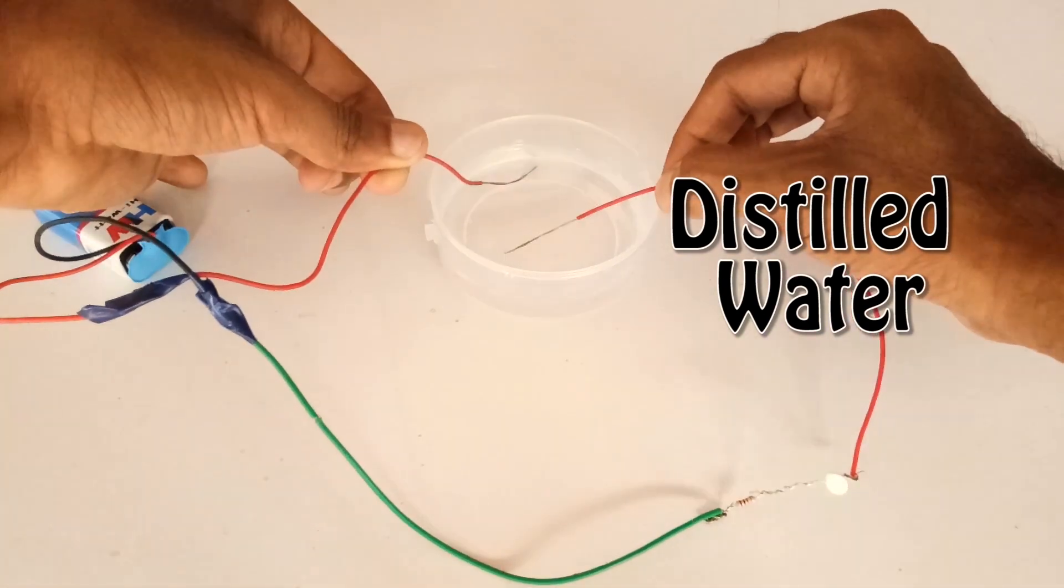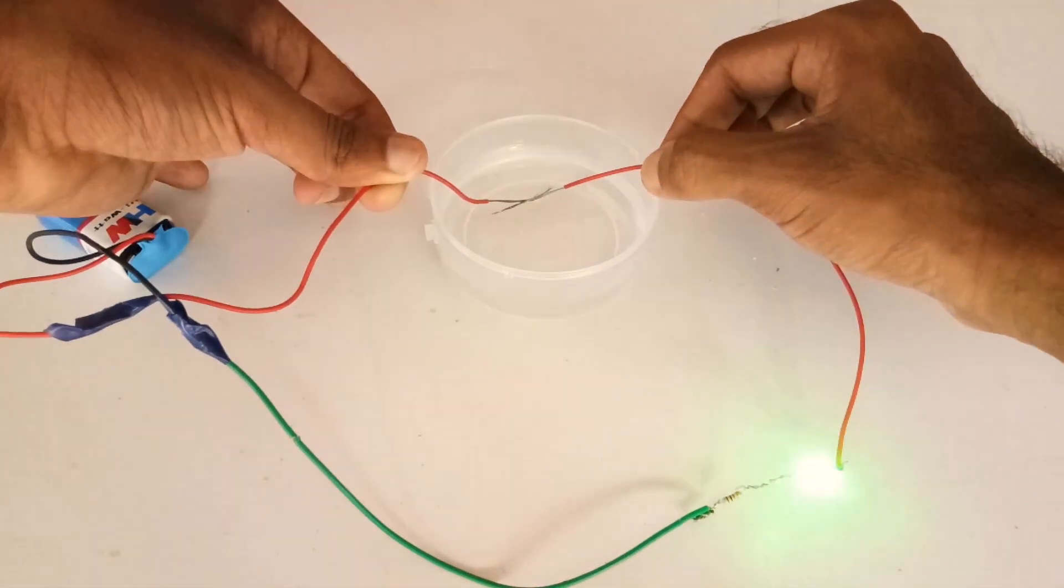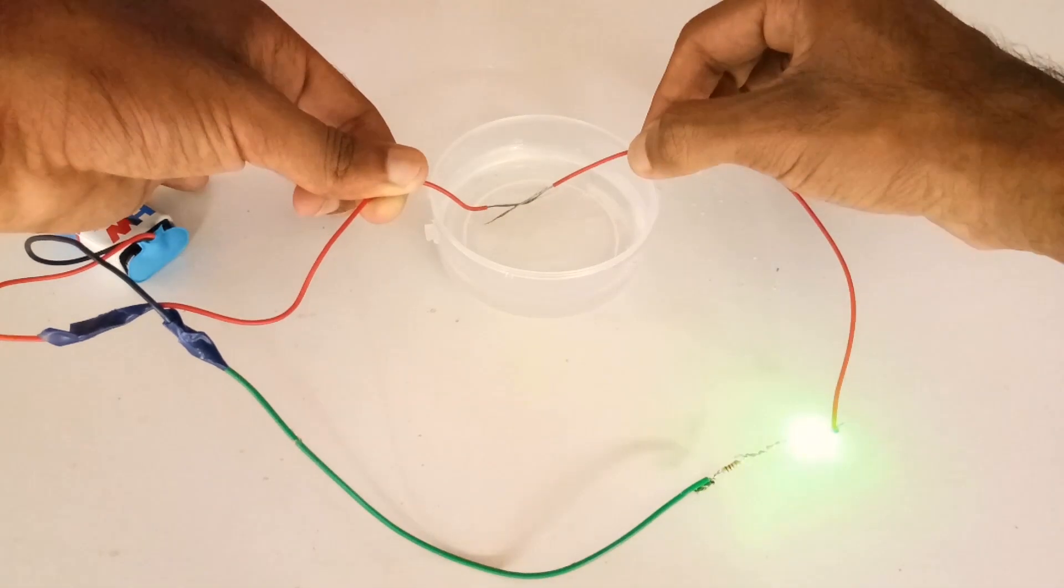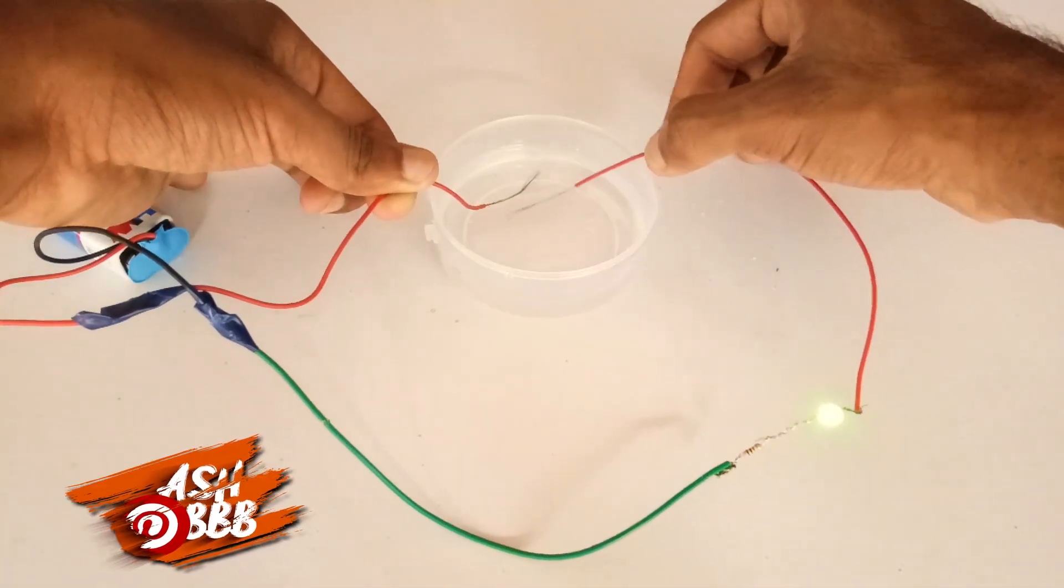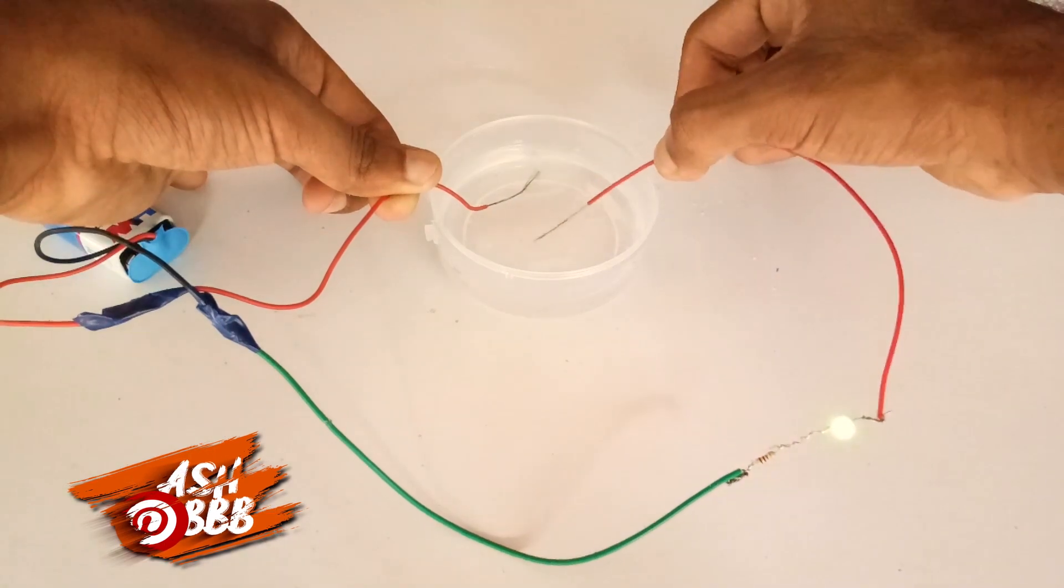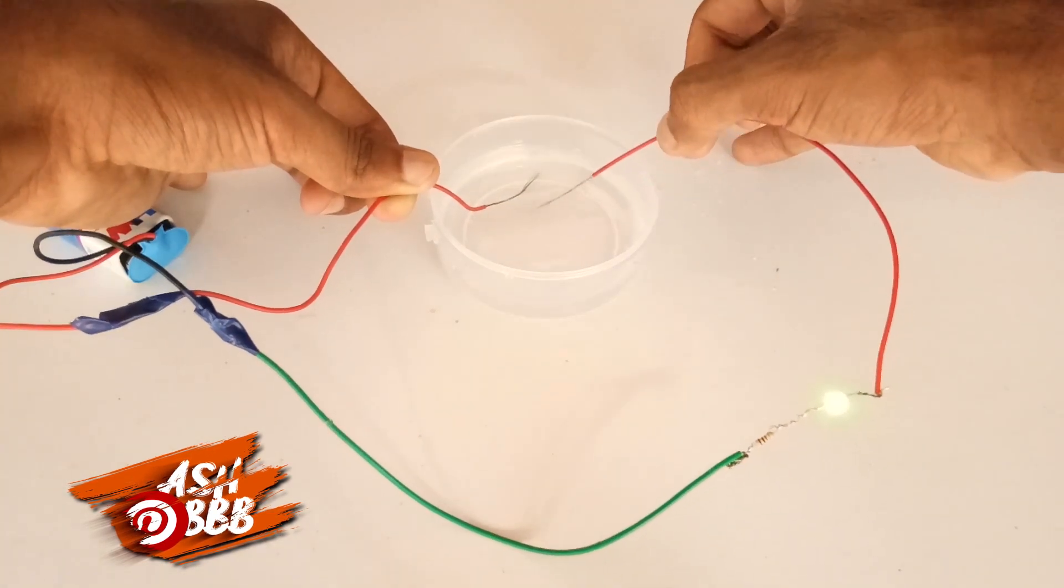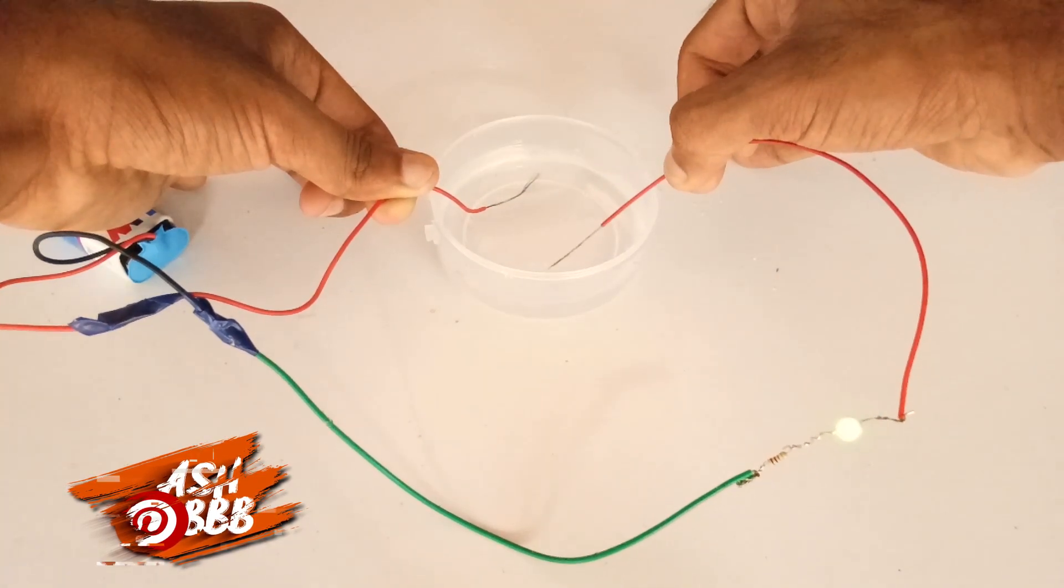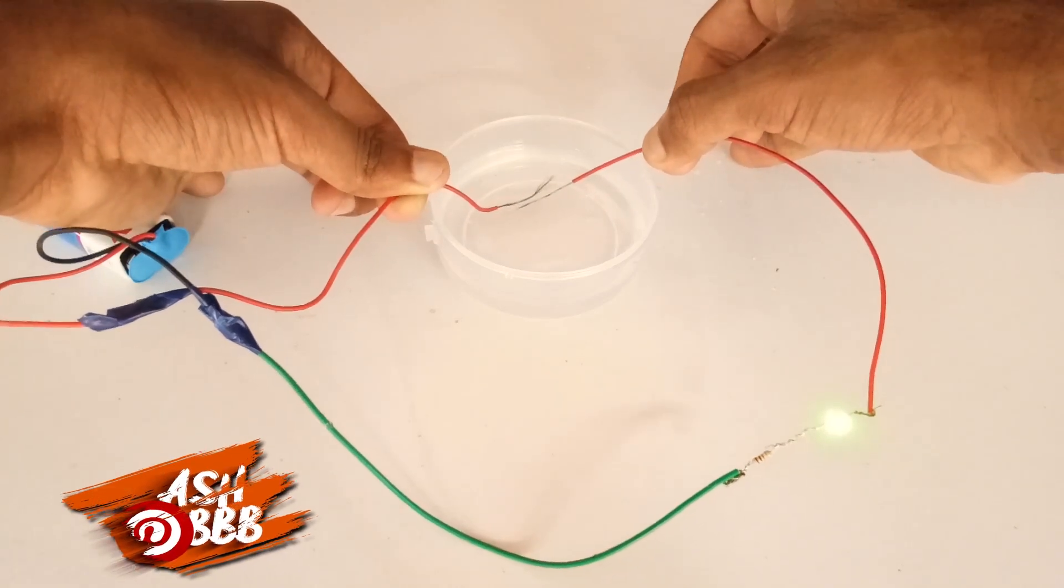the cables contact each other. The light intensity is high, which means it conducts electricity but it's not a pure conductor like water. Distilled water is made by distillation, which means water is turned into vapor and then cooled back into water.